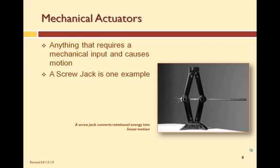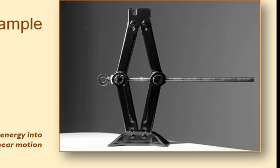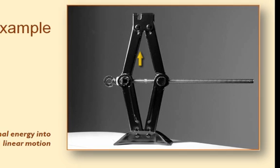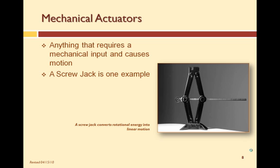Mechanical actuators convert a mechanical or manual input into linear or rotary motion. A common example of a mechanical actuator is a screw jack or tire jack. The figure shows the screw jack in operation. Rotation of the screw causes the legs of the jack to move upward or move together. Inspecting the motion at the top of the jack, this mechanical rotational input is clearly converted into linear mechanical motion. Mechanical actuators can produce a rotational output with a proper gearing mechanism.